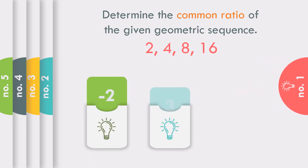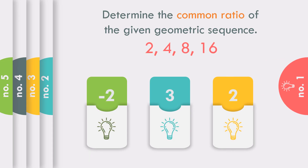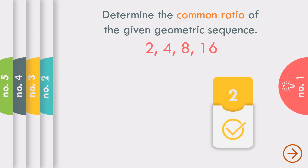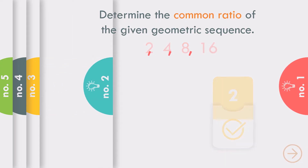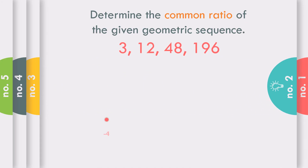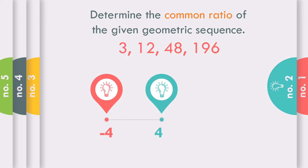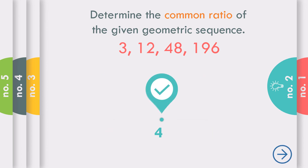Determine the common ratio of the given geometric sequence 2, 4, 8, and 16. What is the common ratio? The answer is positive 2, because 4 divided by 2 equals 2. How about number 2: 3, 12, 48, 196 — what is the common ratio? The answer is positive 4, because 12 divided by 3 equals 4.